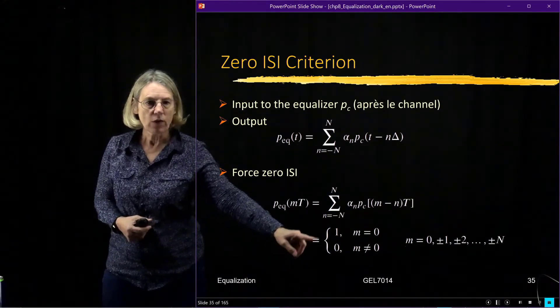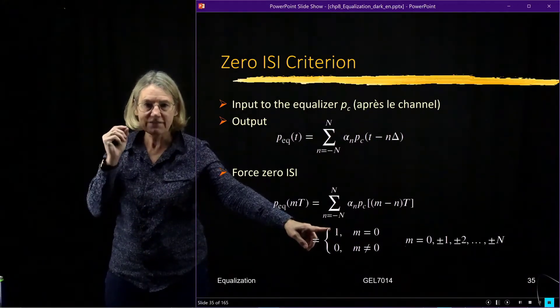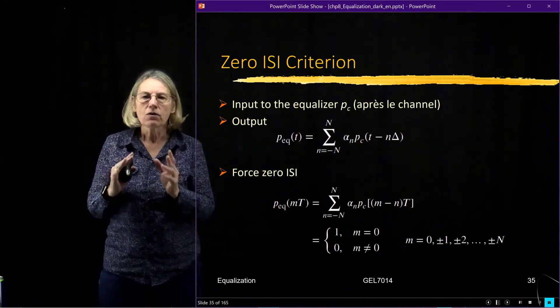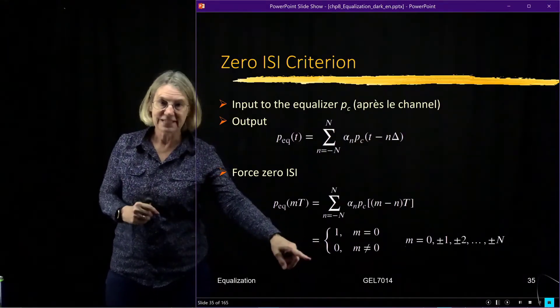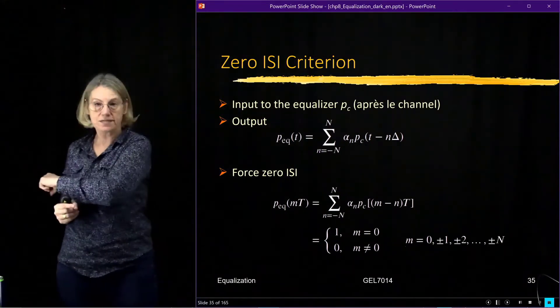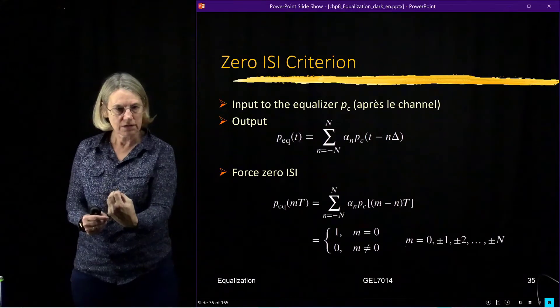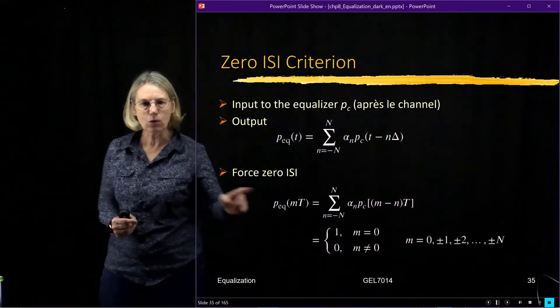And what I want to do is when I'm actually detecting the symbol of interest, I want to see the symbol completely. Now that same symbol, when it's not its time to be detected, when it falls in somebody else's time to be detected, I want its contribution to be zero. So this is the behavior I want coming out of my equalizer.